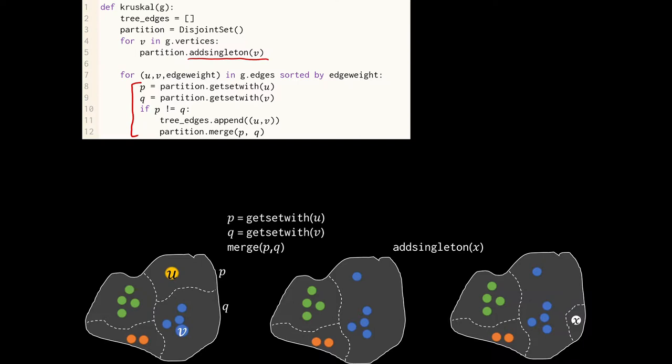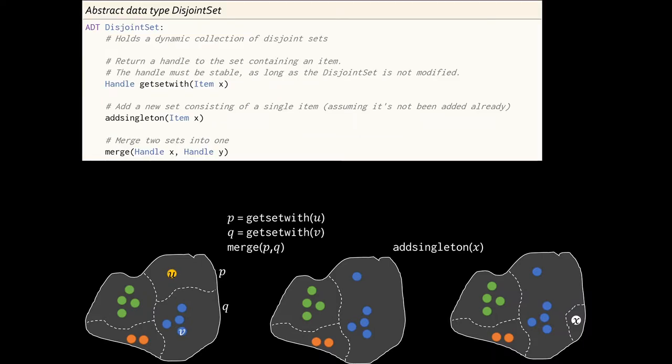So this is the disjoint set data structure. Let's just write it out more formally. The abstract data type disjoint set has three methods: GetSetWith, addSingleton, and merge.